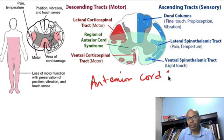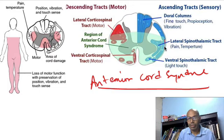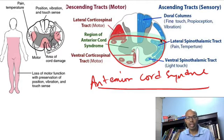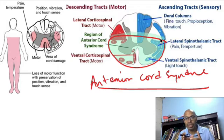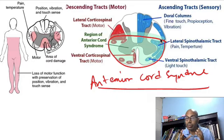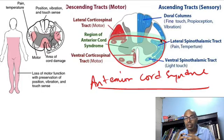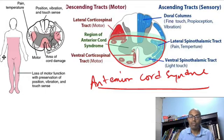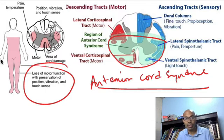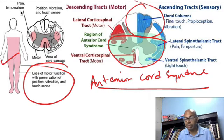The next syndrome is anterior cord syndrome — the second most common. This involves the anterior portion of the spinal cord. The most common cause is direct compression of the anterior cord from trauma, such as a bony fracture compressing the anterior spinal cord. The second cause is injury to the anterior spinal artery, which supplies the anterior two-thirds of the spinal cord — commonly seen in TB spine or vascular thrombosis causing ischemia. This will result in loss of motor function more in the lower limb than the upper limb.